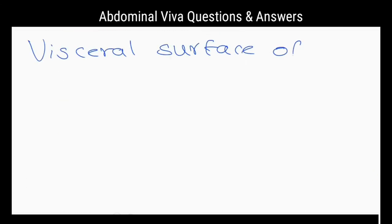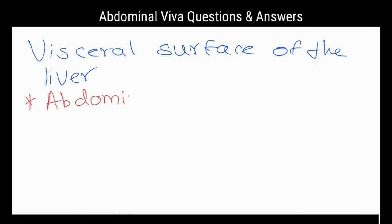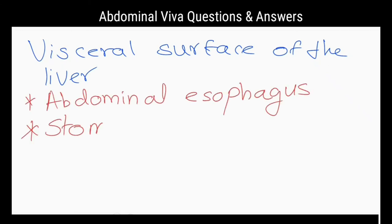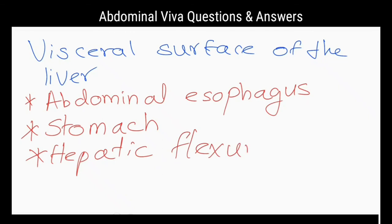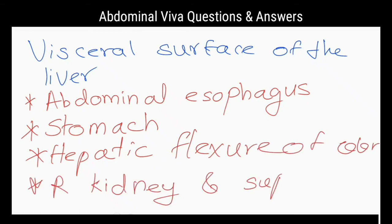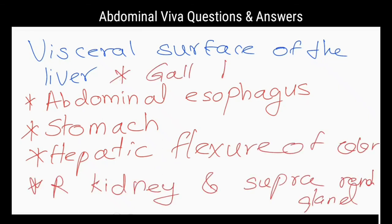What structures are overlapped by the visceral surface of the liver? Abdominal esophagus, stomach, duodenum, hepatic flexure of colon, gallbladder, right kidney, and right suprarenal gland.